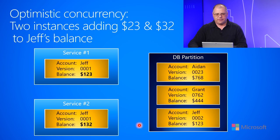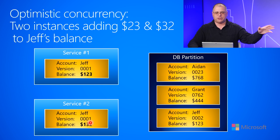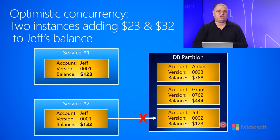Now when service two takes its information and sends it over, the database says: wait a minute, you had version one, but I'm now version two. So you made your change based on earlier information — it's not up to date with what I currently know. And so when this request comes in, the database says no. I refuse to accept this change because it was based on old information, not the new information.